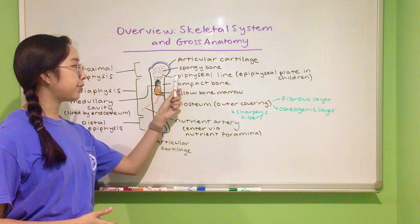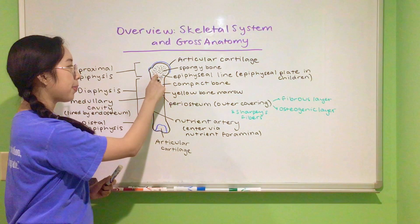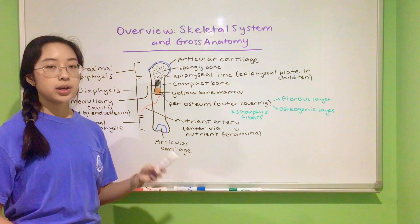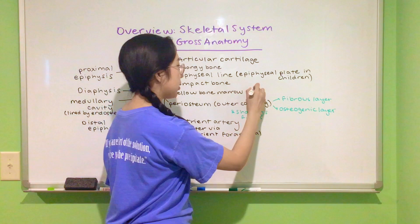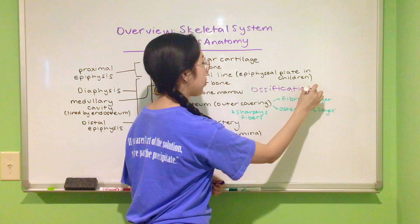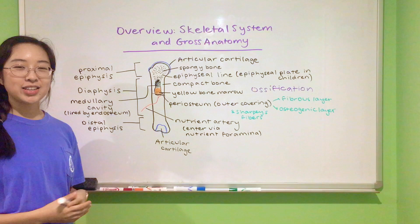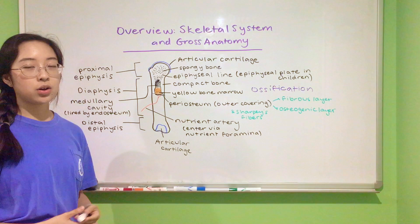Your epiphyseal line divides the bone between the epiphysis and diaphysis. In children, it is actually called the epiphyseal plate and is made of cartilage — this is the site where your bone lengthens and grows. When you become an adult, your epiphyseal plate undergoes ossification, which is the process of cartilage turning into bone. Once it turns into bone, you can no longer grow in that bone. Yellow bone marrow is found in most of the medullary cavities of long bones, is mostly composed of fat — which gives it its color — and stores other nutrients.